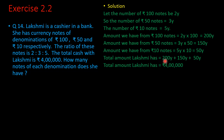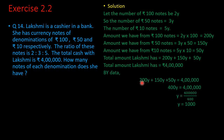Total amount Lakshmi has — we add the three: 200y + 150y + 50y. In the question, the total is given as 4 lakh. So we write the equation as 200y + 150y + 50y = 4,00,000. Adding these three terms we get 400y. So the equation becomes 400y = 4,00,000. Therefore y = 4,00,000 ÷ 400 = 1000.